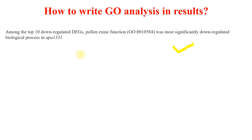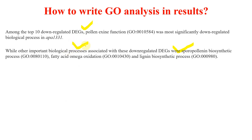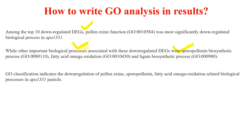Here I have also mentioned some clues: you can talk about the top down-regulated terms from each category, then discuss which biological processes they represent. You can note that the GO classification indicates that down-regulation of polar nexine function, support of polar nexine, fatty acids, and beta-oxidation related biological processes were enriched in the APA1331 panicle. It is important to use the word 'enriched' because it is the standard terminology for GO term analysis.